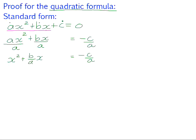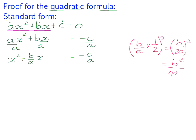We can now find the term that completes the square. We need to take the coefficient of the linear term, the x, which is b over a. We need to halve it, and we need to square it. So that gives us b over 2a, all squared, which is b squared over 4a squared. So that is the term that we need to add onto both sides.